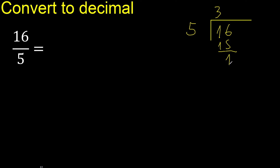Subtract: the remainder is 1. There is no number that goes down, so complete — always complete with 0. Here, place the point — point only once.